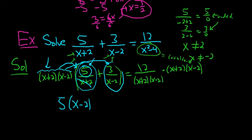Now we're taking this and multiplying it by this. So 3 hangs out, and then the (x-2) cancels, and we're left with 3(x+2). Then over here, everything cancels and we get 12.